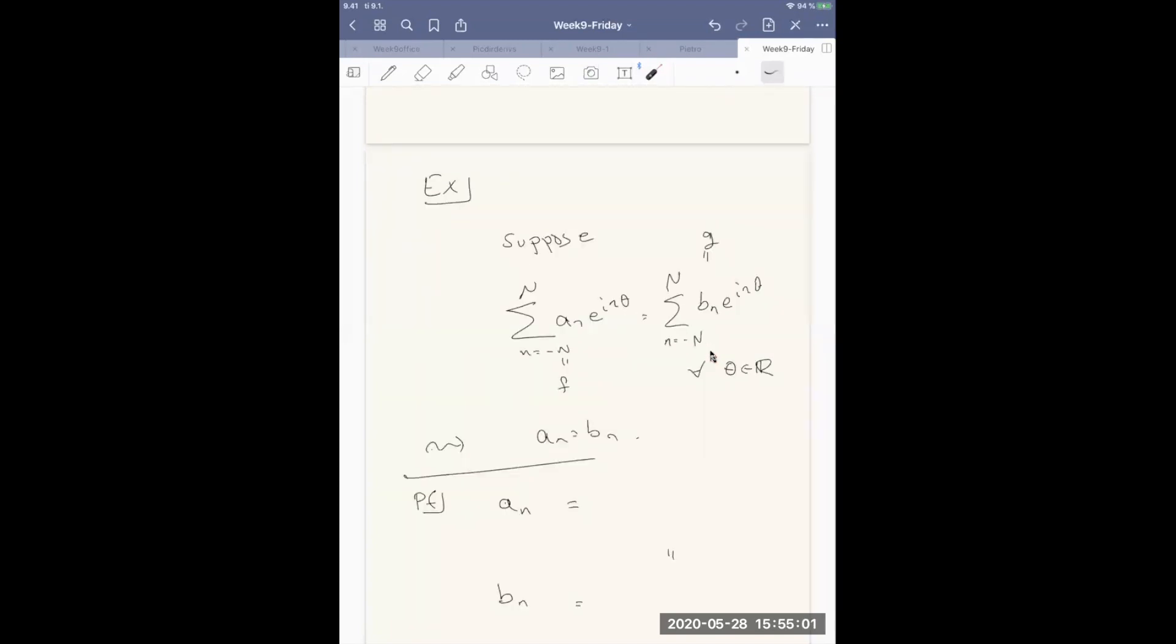So another tool here that will be useful, or idea that will be useful, is that we can prove that if we have two trigonometric series, finite polynomials, an e to the i n theta, and then another one with coefficients bn. And suppose these define the same function, so these are equal for all theta, then we can actually conclude that an is equal to bn. And why is this?